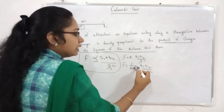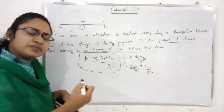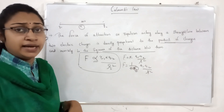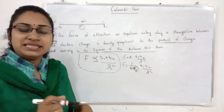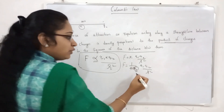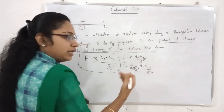We call it epsilon 0. How do we call it? That is permittivity. That's permittivity of air — that's the medium.